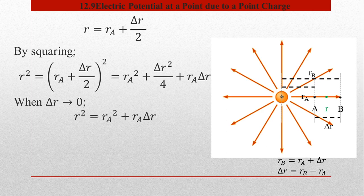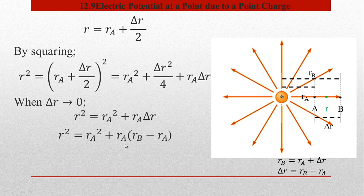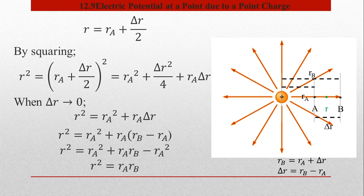جب delta R² کو ignore کریں گے تو دو terms رہ جائیں گی: R_A² plus R_A·(delta R)۔ اب delta R کی وہ value جو پہلے لکھی گئی تھی substitute کریں۔ Algebraically solve کرنے پر R_A² اور minus R_A² ایک دوسرے کو cancel out کریں گے، اور finally R² کی value R_A اور R_B کی terms میں آ جائے گی۔